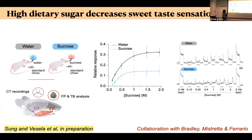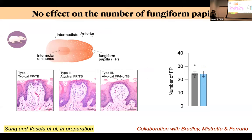After four weeks, we found a quite marked reduction in the sensory nerve's ability to respond to both low and high concentrations of sucrose compared to the water rats. We didn't see any changes in sodium chloride responses. We also analyzed the number and distribution of fungiform papillae on the front of the tongue — type 1, type 2, and type 3 — and found no changes in the number or distribution of fungiform papillae in the sucrose rats.